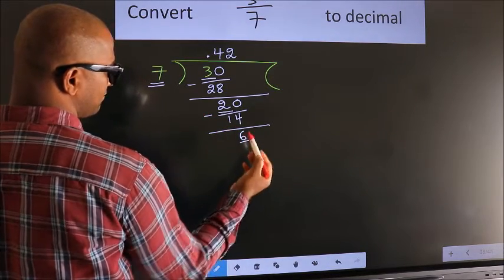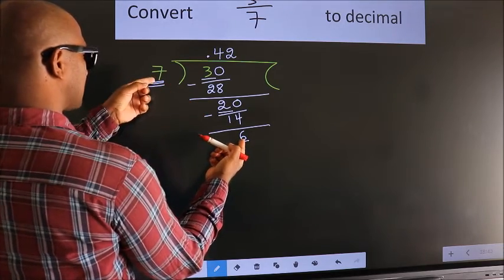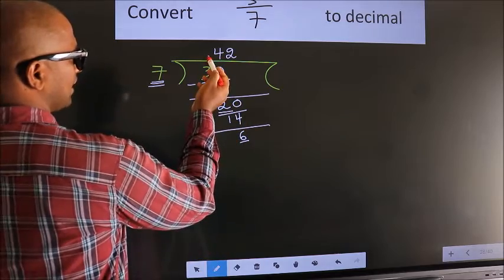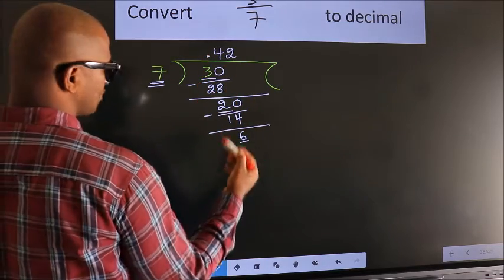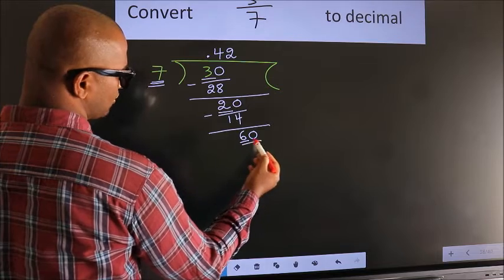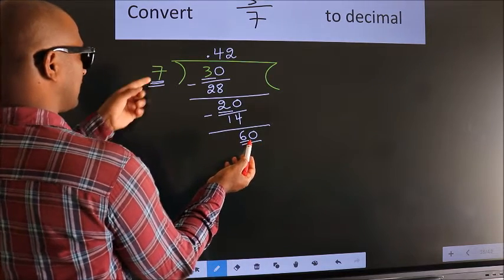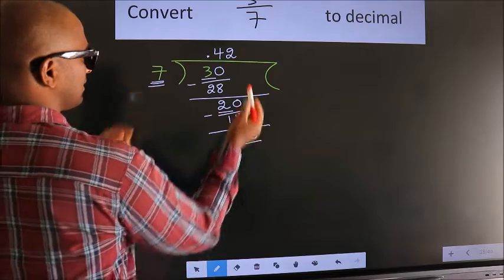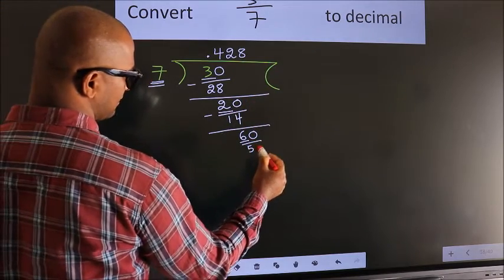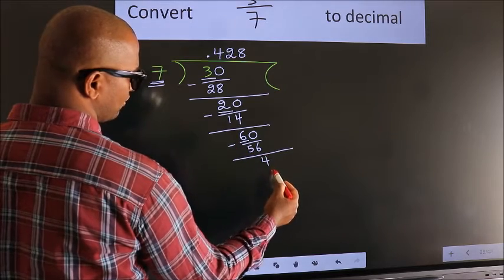Here we have 6, here 7. 6 is smaller than 7. And we already have the decimal, so we can directly take 0 — so 60. A number close to 60 in the 7 table is 7 eights 56. Now we subtract. We get 4.